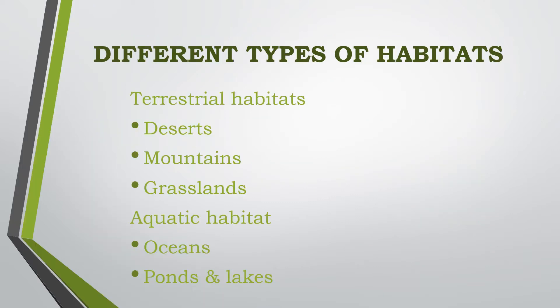Children, as you all know, there are two different types of habitats that we had studied. These are the terrestrial habitats and the aquatic habitats. Terrestrial habitats include the deserts, mountains, and grasslands, while the aquatic habitats include the oceans, ponds, and lakes.